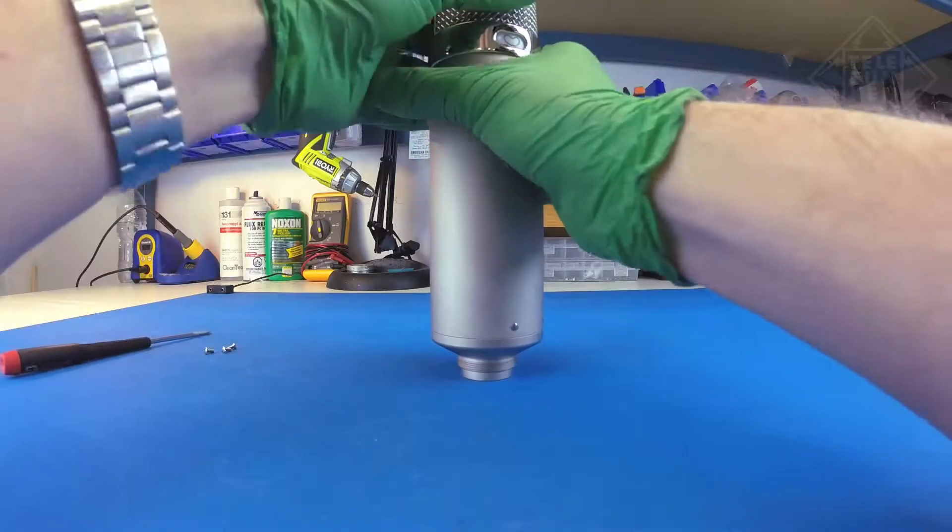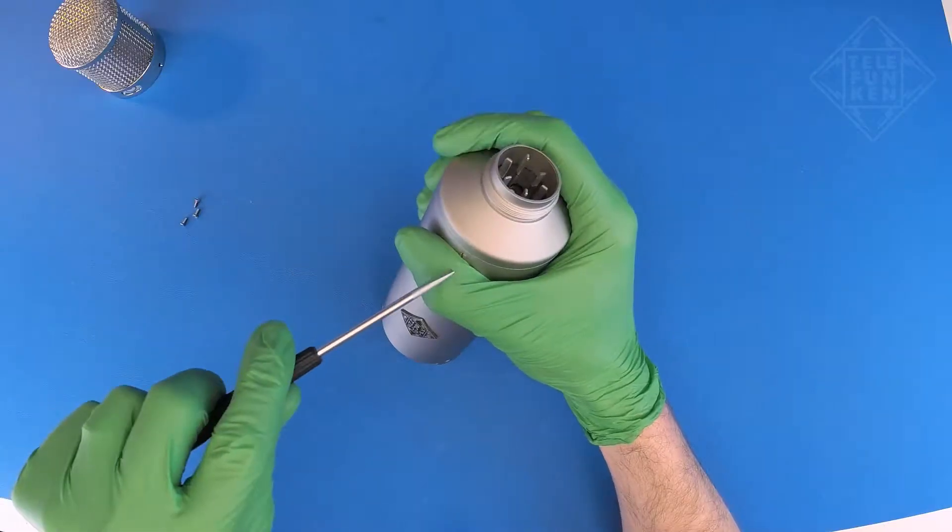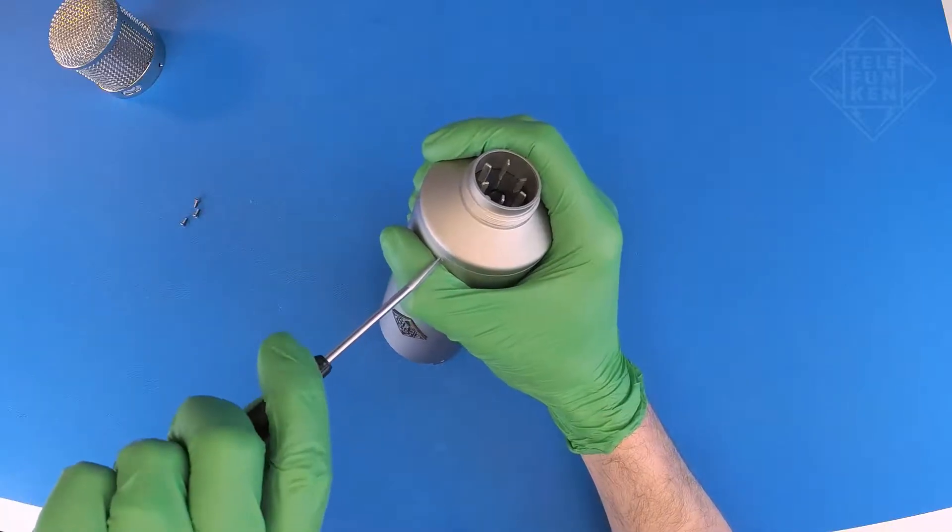Remove the head assembly and set it aside. Flip the microphone over and remove the one screw at the base of the body tube.